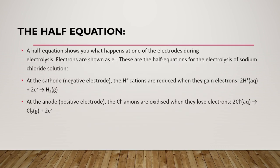The half equation shows what happens at one of the electrodes during electrolysis. Electrons are shown as negative (e⁻). At the cathode, H⁺ cations are reduced when they gain electrons: 2H⁺ + 2e⁻ → H₂.